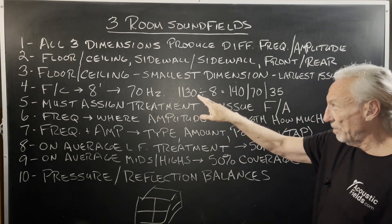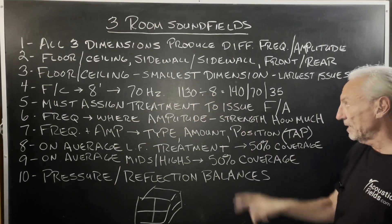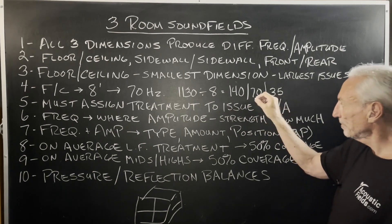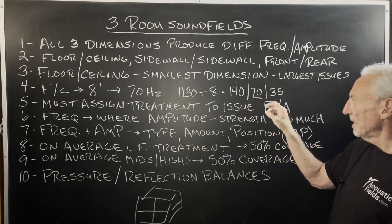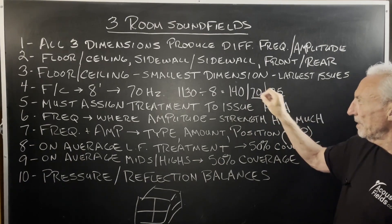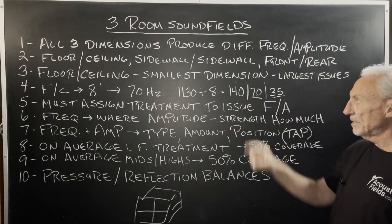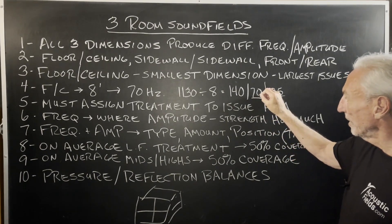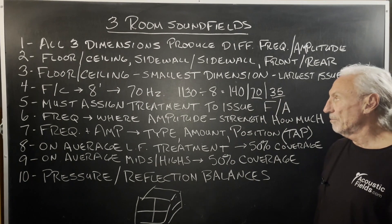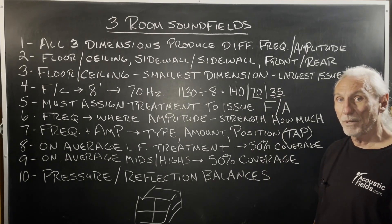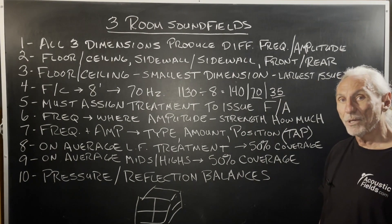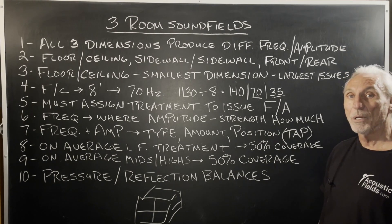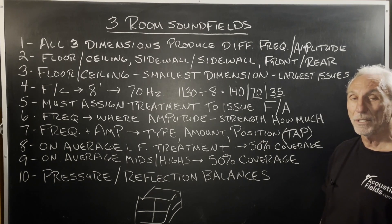70 hertz is a standard problem with an 8-foot ceiling. How do you get that? It's 130 divided by 8 — speed of sound divided by distance. You get three variables: 140, 70, and 35. Because 35 is the fundamental of 70, and 70 is the fundamental of 140. So the biggest problems with 8-foot ceilings are 140 and 35 hertz. Most of the time we don't treat the 35 hertz region because people don't want to spend the money or cover the distances required.